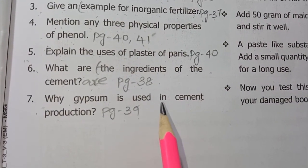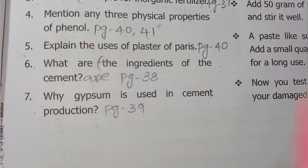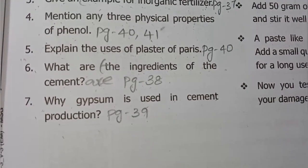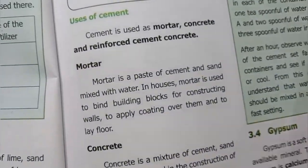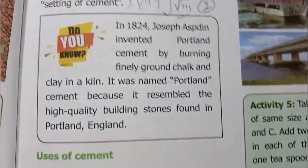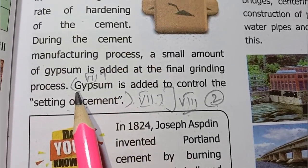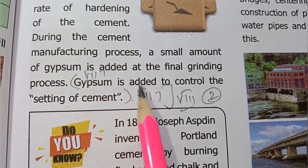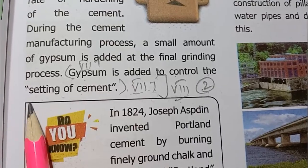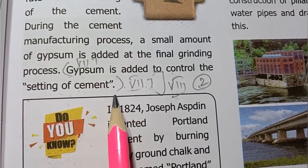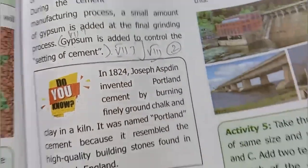Seventh one: why is gypsum used in cement production? (Page number 39) Gypsum is added to control the setting of cement.